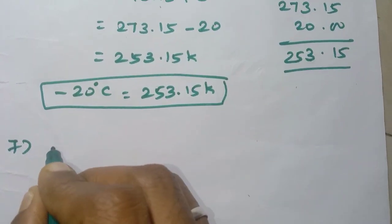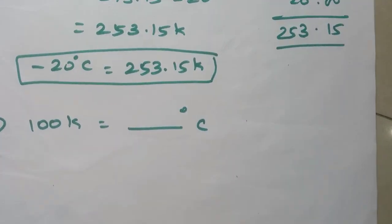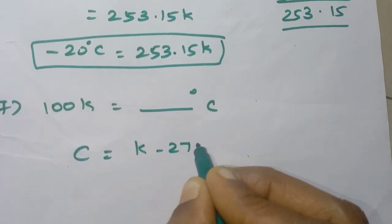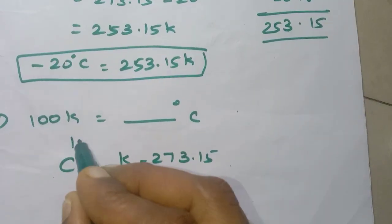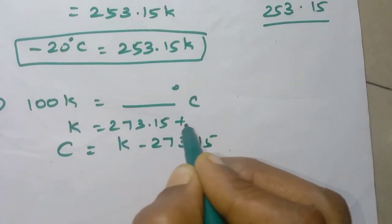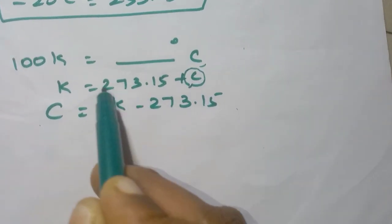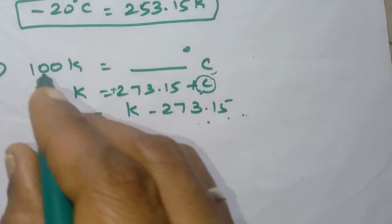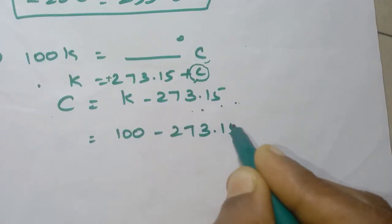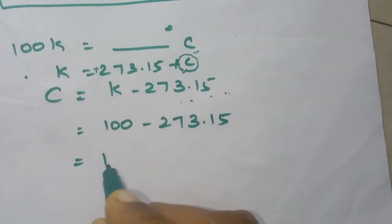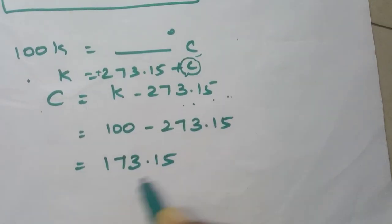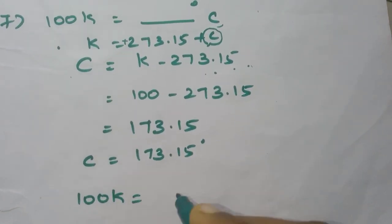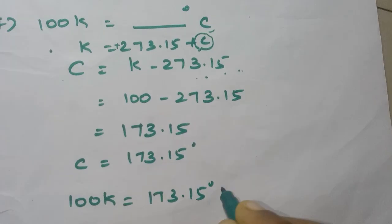Seventh problem: 100 Kelvin equals how many degrees Celsius? The formula is C equals K minus 273.15. Substituting K equals 100: 100 minus 273.15. Since 273 is larger, we get minus 173.15. So 100 Kelvin equals minus 173.15 degrees Celsius.